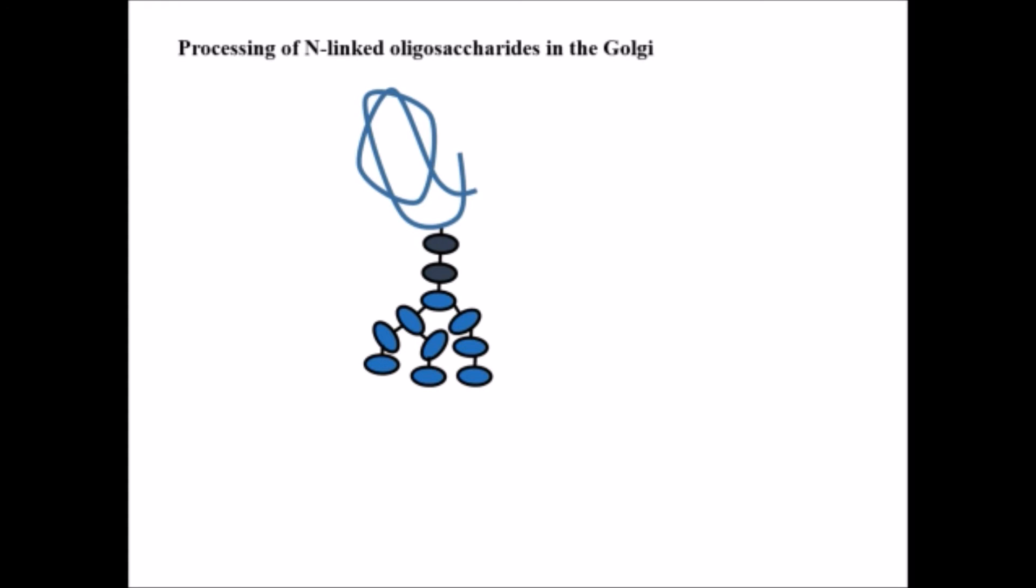This is not the end of glycosylation. The N-linked glycosylation which was in the endoplasmic reticulum is now carried out to the Golgi body where further glycosylation occurs. First, four mannose sugars are removed, followed by the addition of one N-acetylglucosamine.